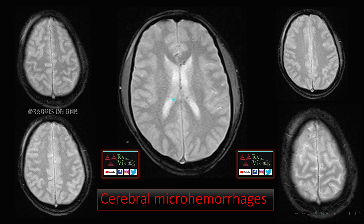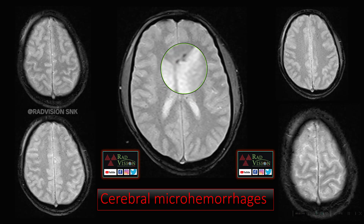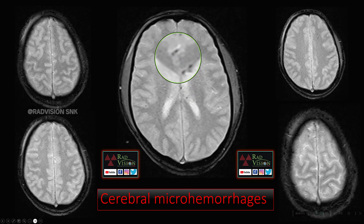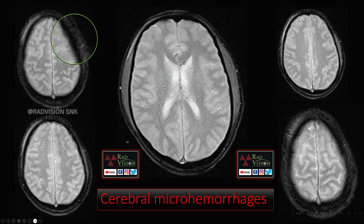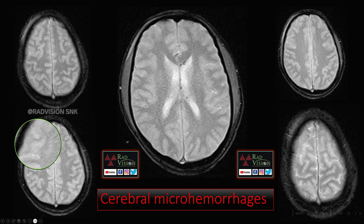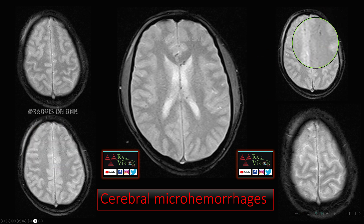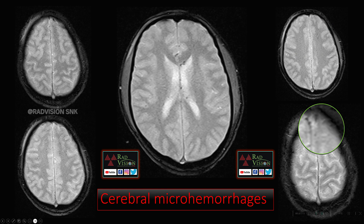There are tiny hemorrhagic foci — tiny microhemorrhages — which can be seen in the periventricular white matter and in the subcortical white matter of bilateral frontal lobes. These tiny hemorrhagic foci are nothing but cerebral microhemorrhages, which are also seen in DAI. In the subsequent slides, we will see what are the other causes of cerebral microhemorrhages.